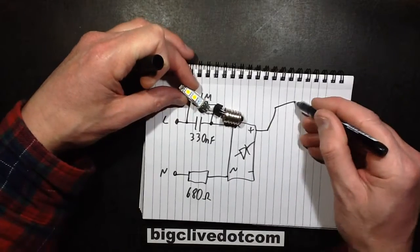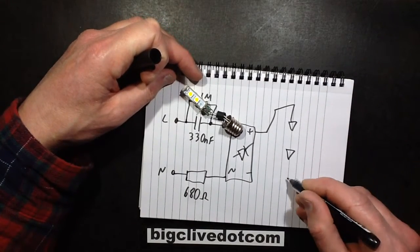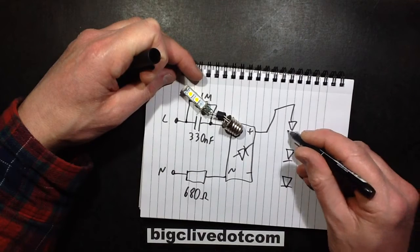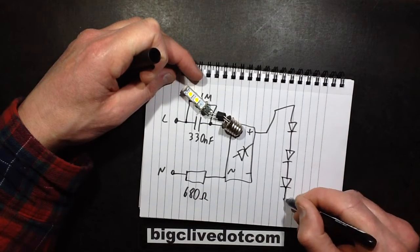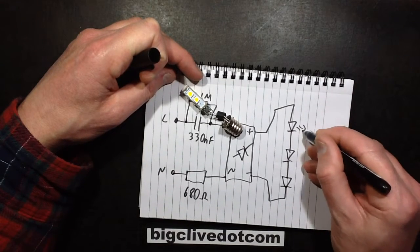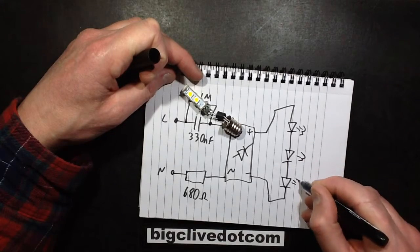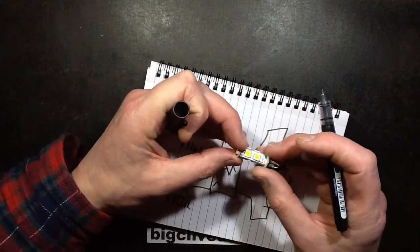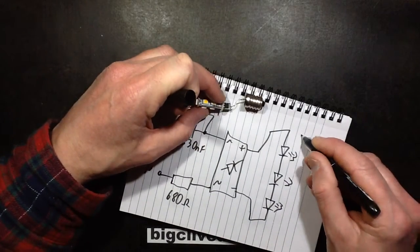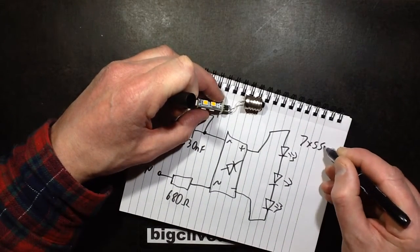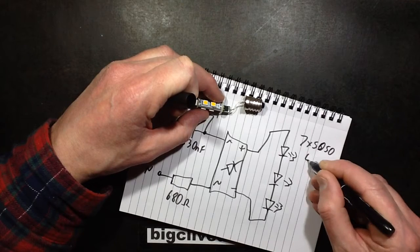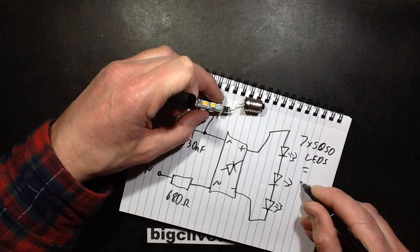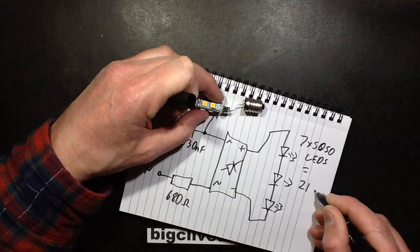Then, ultimately, it's just the diodes, which I won't draw too many. For time reasons. So that's... There's three circuit boards plus the one that ends. So that's 7 times 5050, 5050 LEDs. Equal 21 chips.